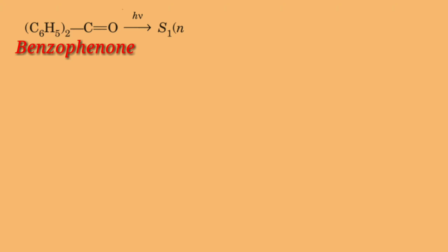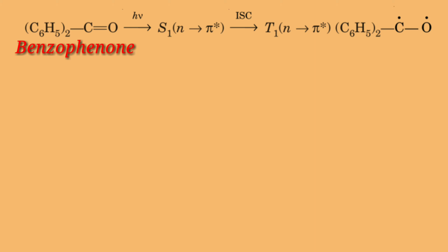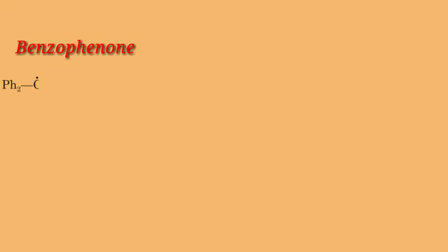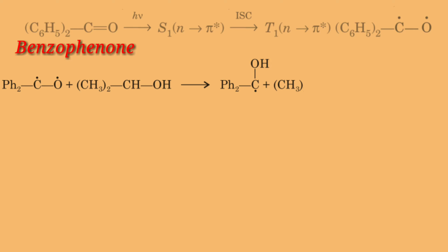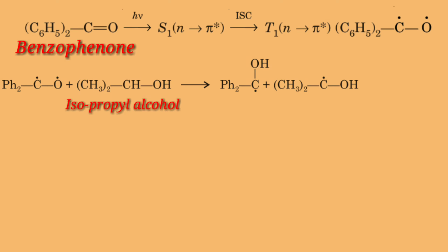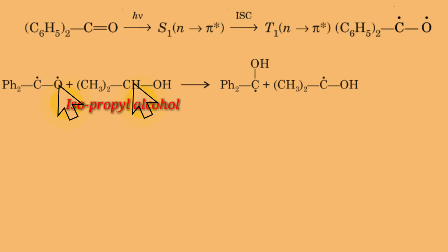Here, the carbonyl compound, i.e. benzophenone, on photolysis goes to the singlet state S1. Then through intersystem crossing it goes to the triplet state, and the molecule is ready for further reaction. The benzophenone radical in its triplet state reacts with the donor molecule, i.e. isopropyl alcohol. This donor molecule transfers its hydrogen to the oxygen atom of the carbonyl group of benzophenone, forming an isopropanol radical and a benzhydrol radical.